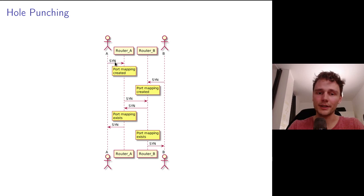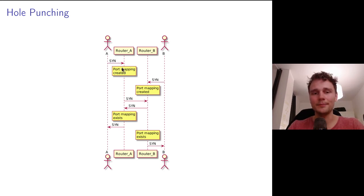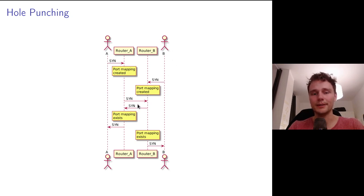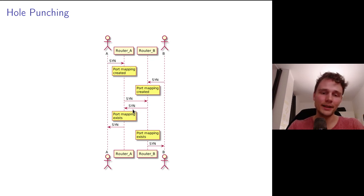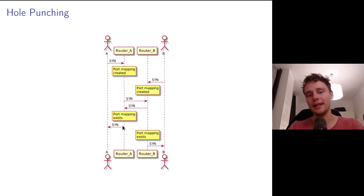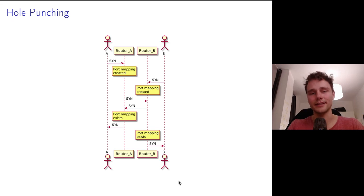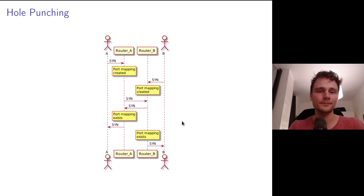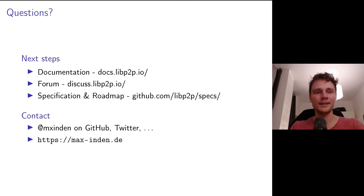Through this entire mechanism, these two simultaneous dials happen at roughly the same time. Each punches a hole in their firewall; the SYN packet from A and the SYN packet from B meet somewhere in the internet. The SYN from B passes through the punched hole in Router A and reaches A, and vice versa for B, resulting in a full connection — TCP in this case, though it also works with UDP and QUIC.